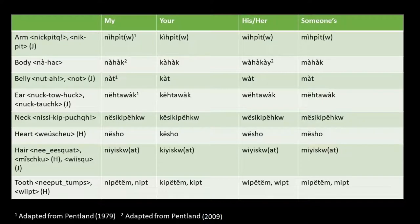Now I'll go through examples of how to apply the pronoun prefixes. For arm: nīhpīt (my arm), kishpīt (your arm), wihpīt (his or her arm), mihpīt (somebody's arm). For body: nahak (my body), kahak (your body), wahakai (his or her body), mahak (somebody's body).